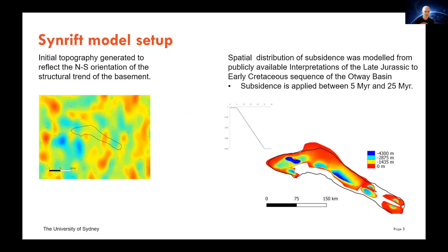The model that I'm building is initiated with a synthetic topography. There's a constant subsidence between five and 25 million years, and all the deformation is based on the interpreted structure of the SynRift late Jurassic to early Cretaceous Crayfish Subgroup in the Otway Basin, which is essentially the early SynRift sequence there.